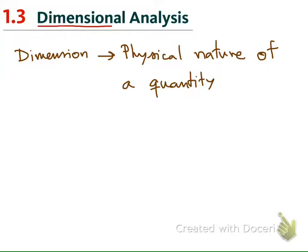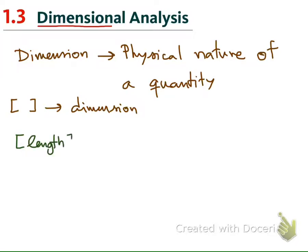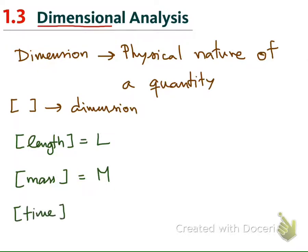We use the symbol of square brackets to denote the dimension. For the basic quantities, we have symbols for three basic dimensions: for length we use the symbol L, for mass we use the symbol M, and for time we use the symbol T. These are the basic dimensions.